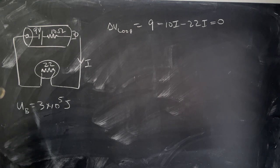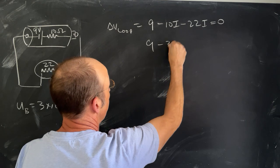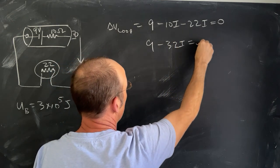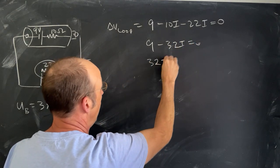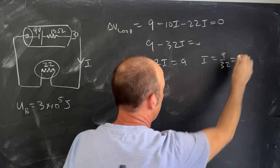Now I can solve that equation for i. I have 9 minus 32i equals 0, so 32i equals 9, i equals 9 over 32.